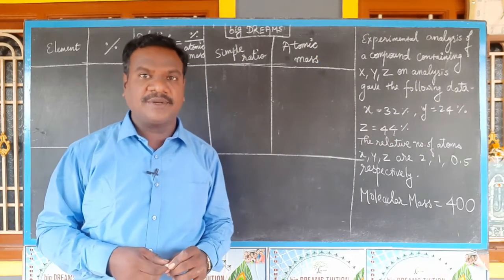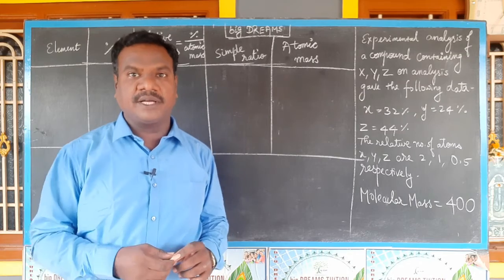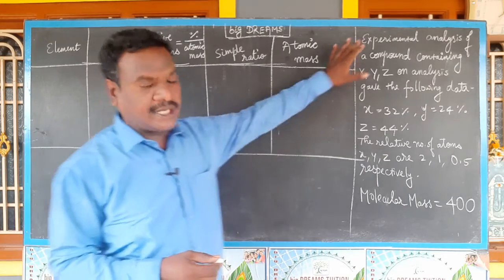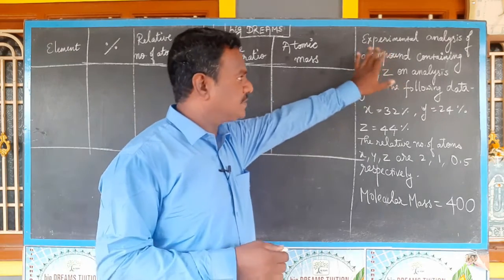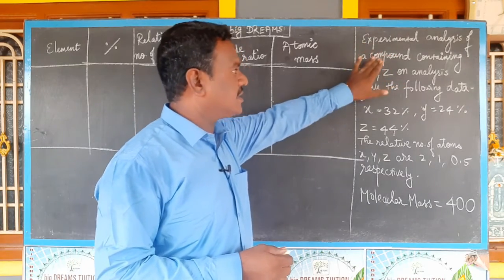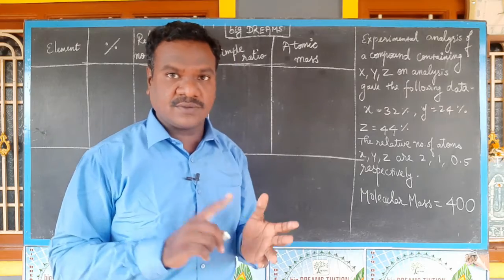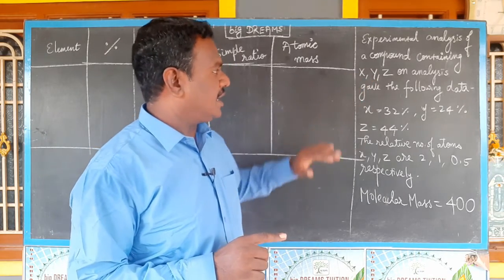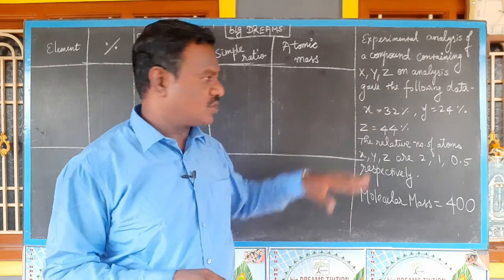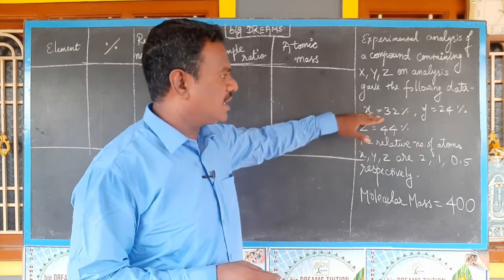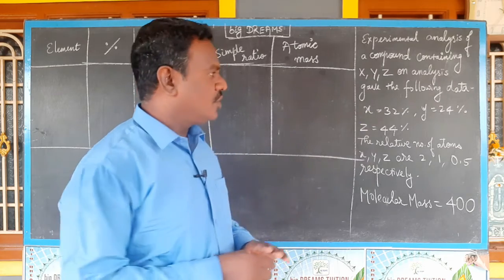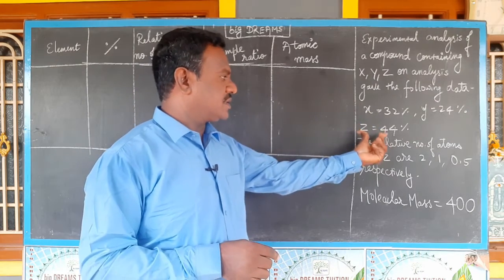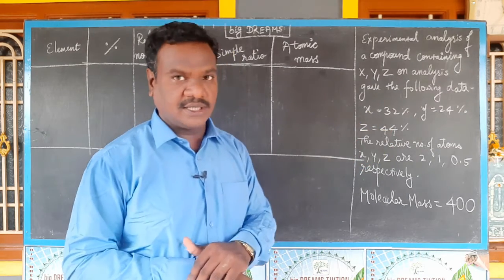Hello students, we have another problem empirical formula based. Experimental analysis of a compound containing X, Y, Z on analysis gives the following data: X percentage 32%, Y percentage 24%, Z 44%.